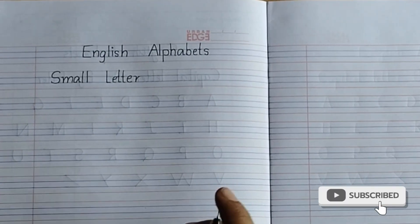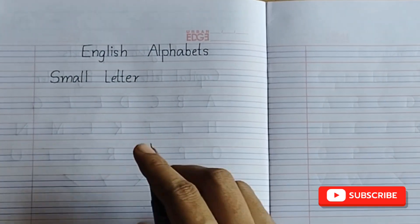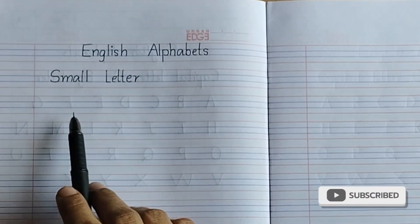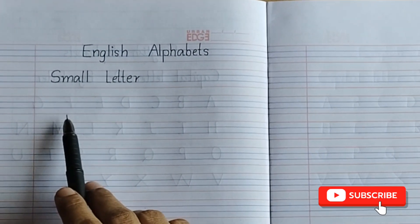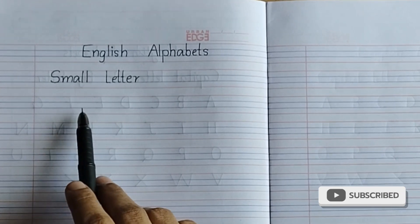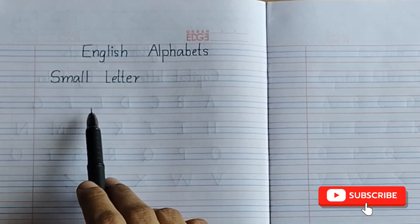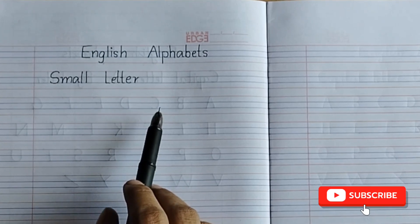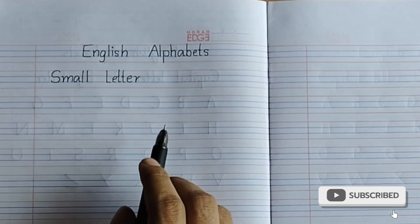Hello kids, today we are going to learn English alphabets, small letter, and also we will learn how to write small letter alphabets in four lines, four line book. Okay, let's start.